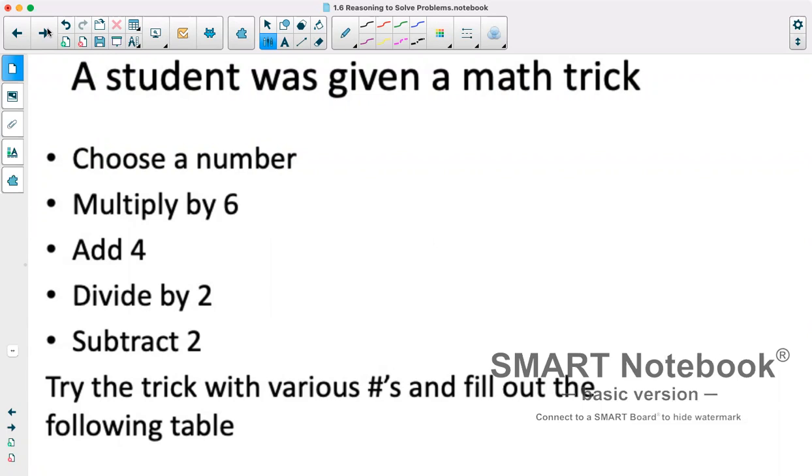A student was given a math trick: choose a number, multiply by 6, add 4, divide by 2, subtract 2. We're going to try the trick with various numbers and then fill out a table.